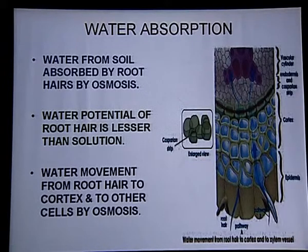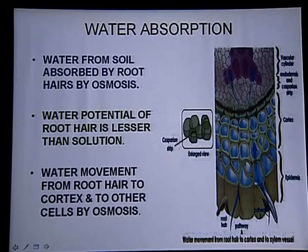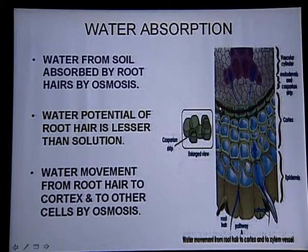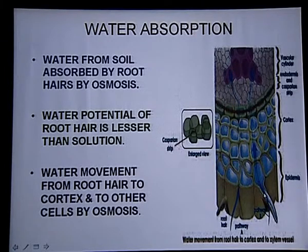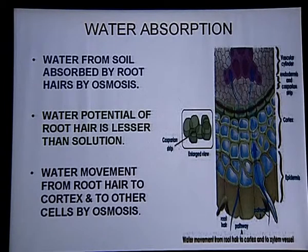Roots absorb water through root hairs. In the diagram, water is absorbed through root hairs, then first goes into the epidermis. In root anatomy we discussed: epidermis is present along with root hairs, then cortex, then endodermis, then pericycle, and then vascular cylinders. Water absorbed through osmosis goes from root hairs to cortex, then to endodermis, then into the pericycle, then finally into the xylem, and from xylem it is distributed to all parts of the plant.